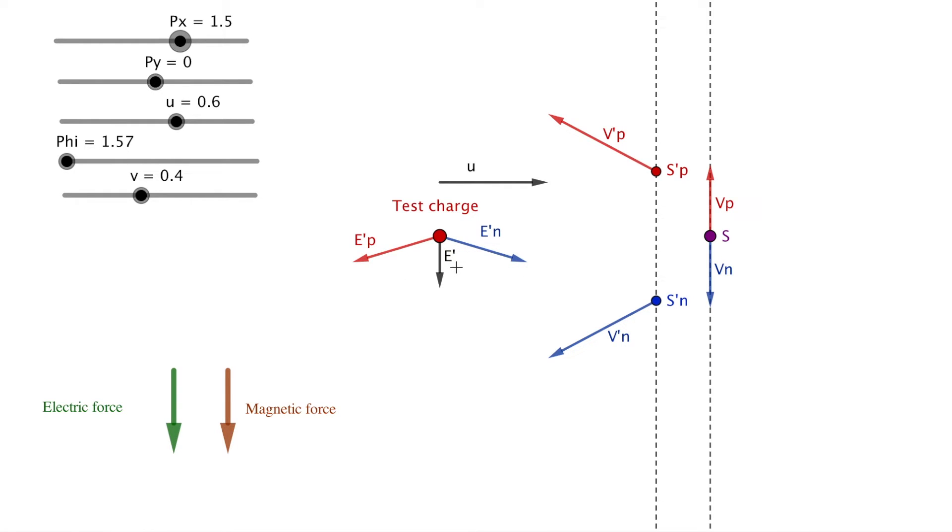The vectors e'n and e'p are the electric field at the position of the test charge in the primed system. The vector e' is their sum. Down here the brown vector shows the magnitude of the magnetic force in the system where the wire is at rest. The green vector shows the magnitude of the electric force in the system where the charge is at rest. Note they are not just graphical representations. The two forces are independently calculated from each of the two systems, and the fact that they have the same direction and magnitude shows our electrodynamic approach is correct.